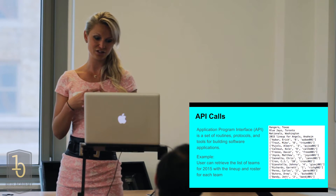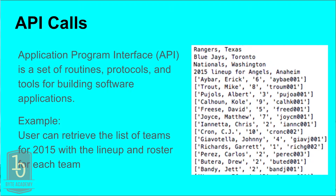API calls — the Application Program Interface — is basically a set of different commands between the user and the computer, the database, and all the technological infrastructure, that gives commands to get the information you want. And actually, for the first time in about three weeks since I started the project, I had a success story yesterday. I was excited — I was able to actually pull information from the database.